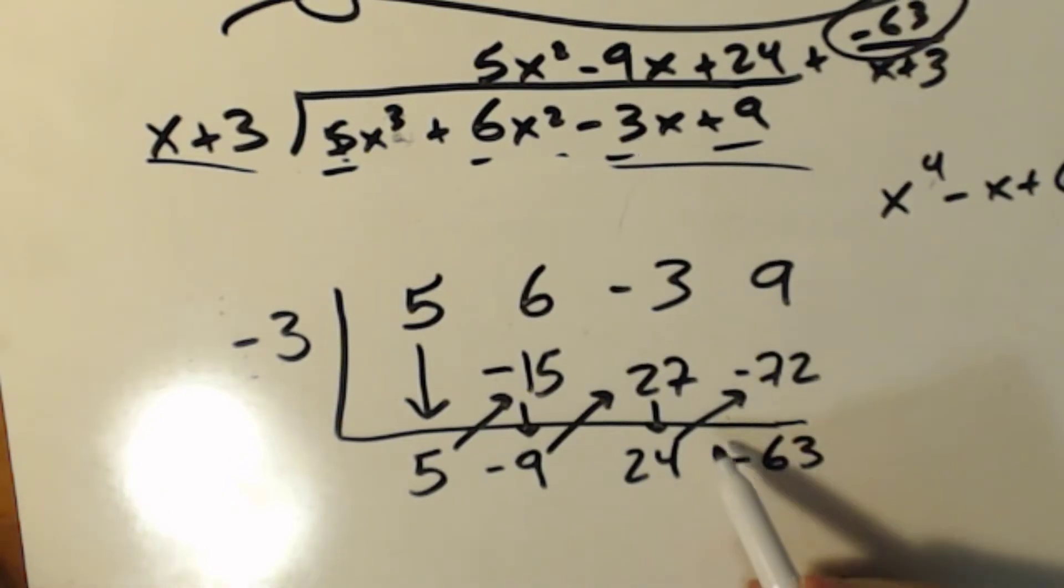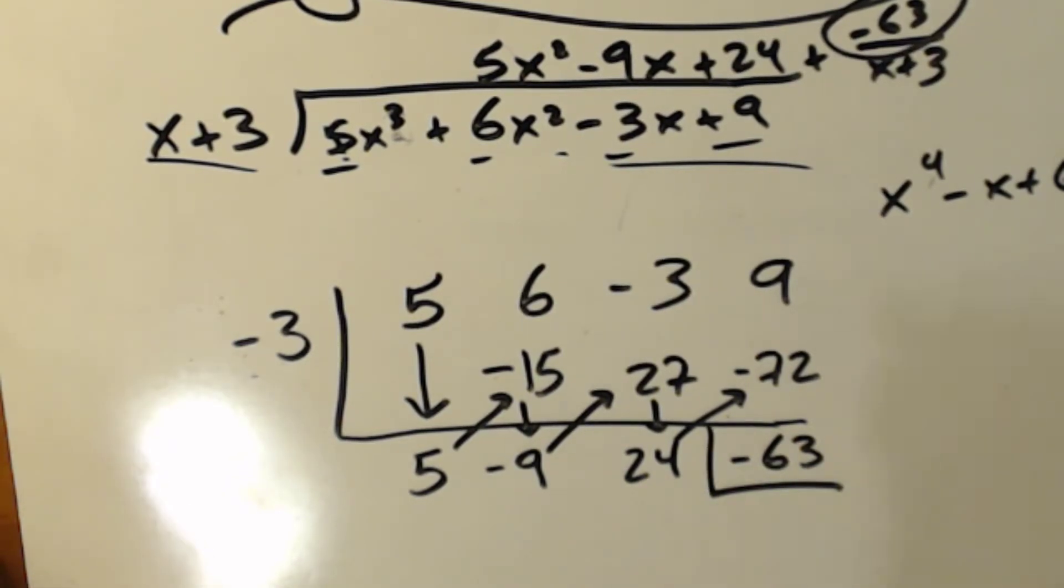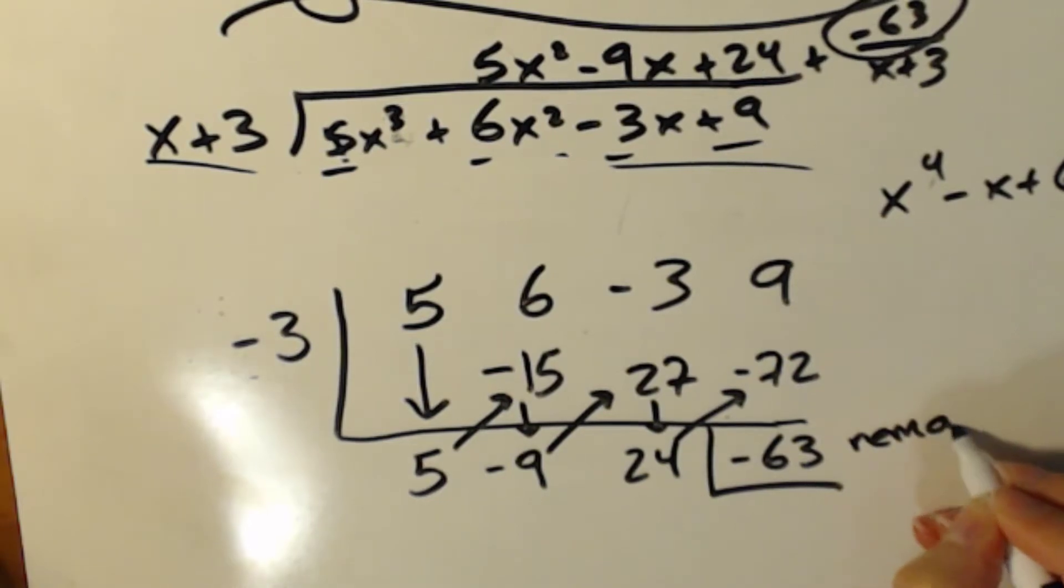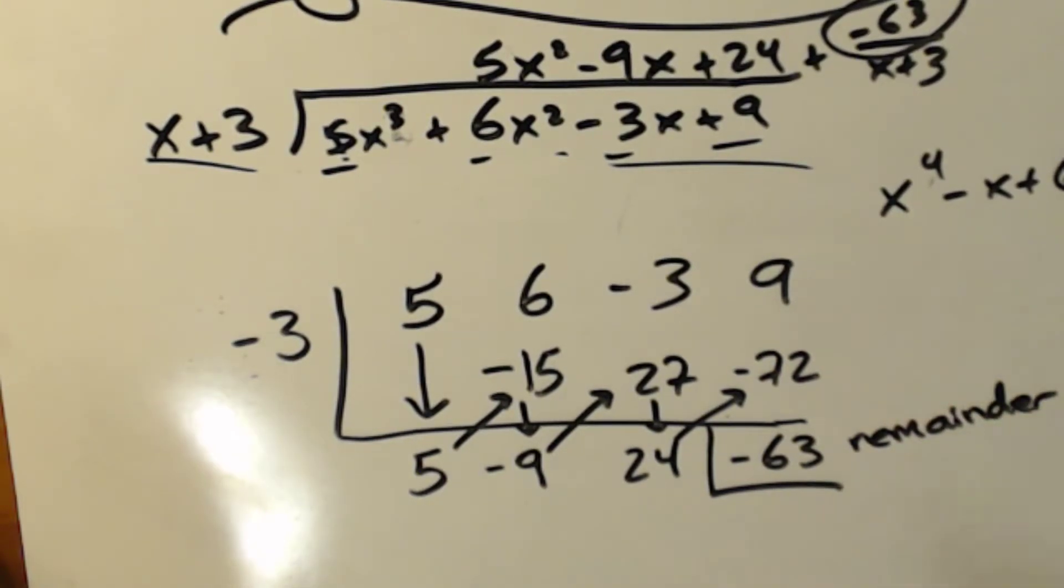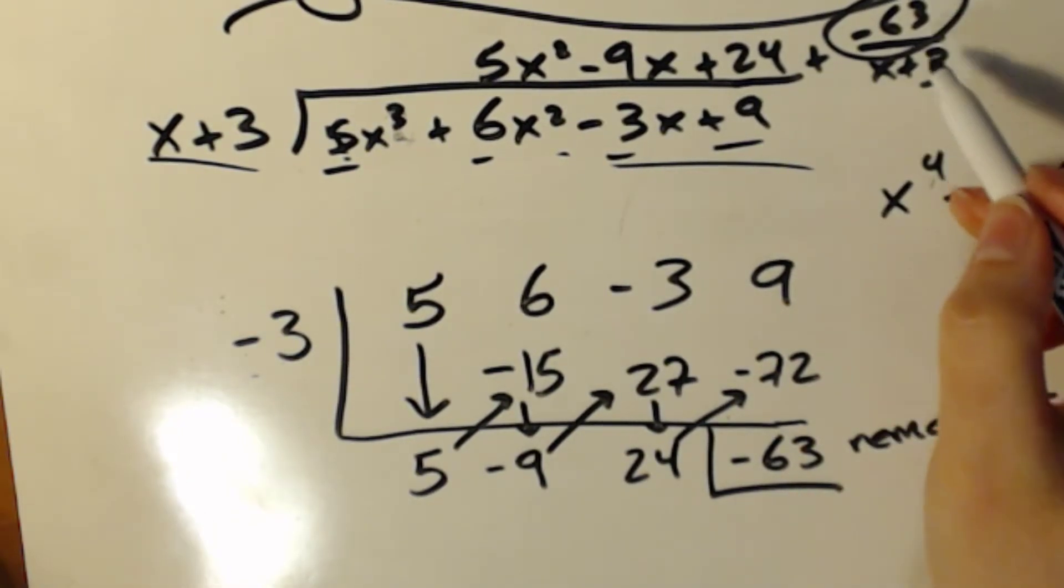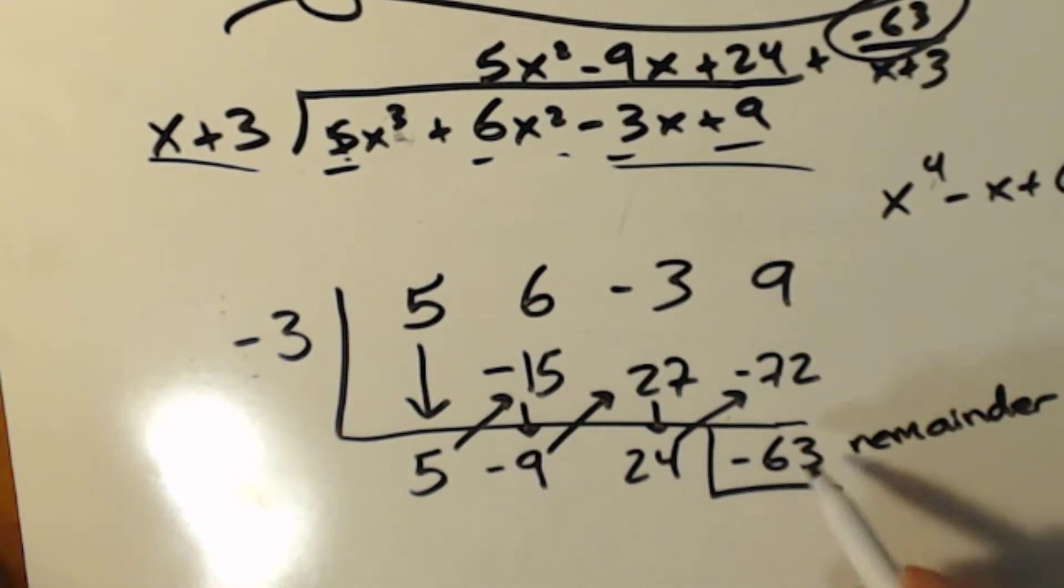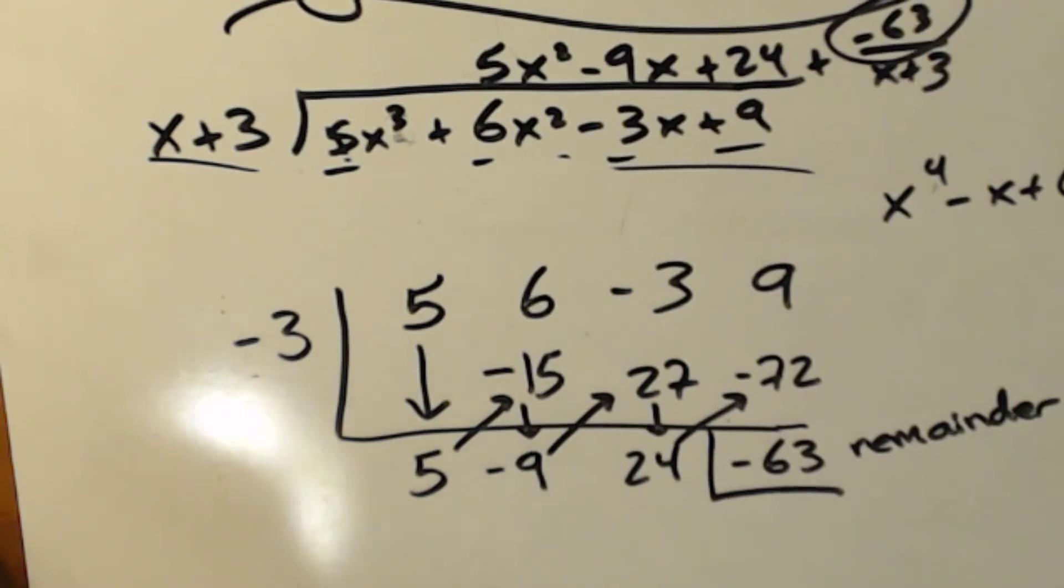So from there, what we're going to do is I'm going to put a little box around my very last term. And I'm going to say that last term is my remainder, as we saw up here. Negative 63 is my remainder. You're going to care about this remainder, like I said, for remainder theorem, factor theorem, etc.